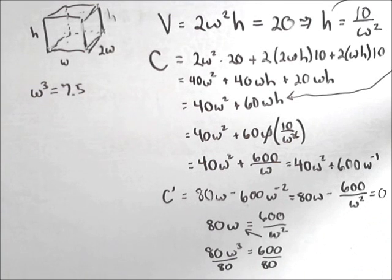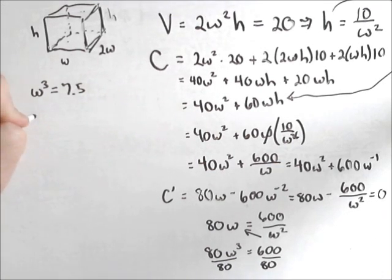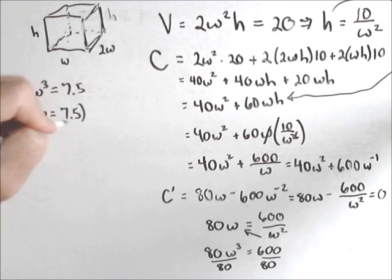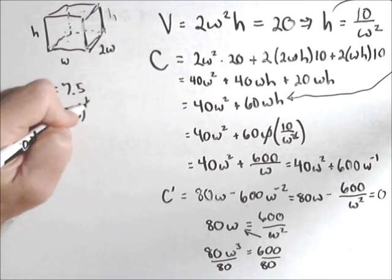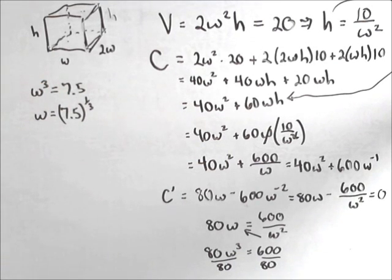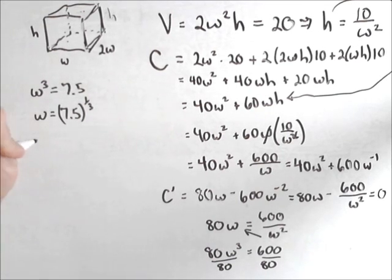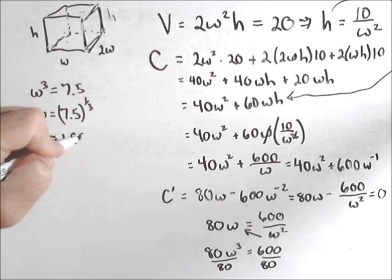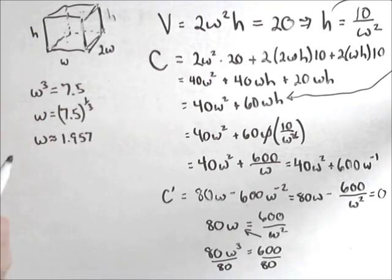And now what we'll do to get w is we'll raise both sides to the 1 third power. So w equals 7.5 to the 1 third. And be sure when you put this in your calculator that you put the 1 third in a set of parentheses if you decide to do it this way. So we're getting a w of about 1.957.